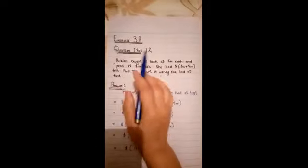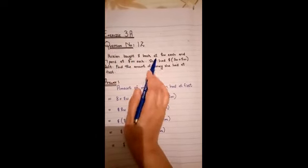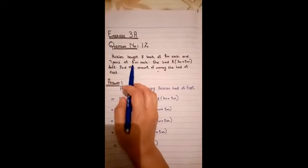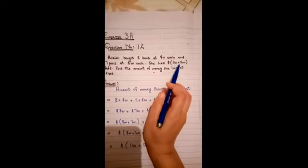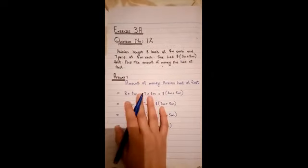Now the next one is question exercise 3A, question number 12. Huishyan bought 8 books at $W each and 7 pens at $M each. She had $3W plus 5M left. Find the amount of money she had at first.